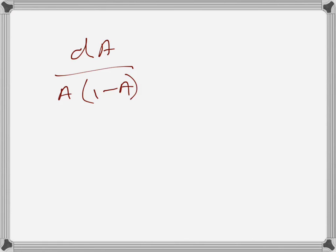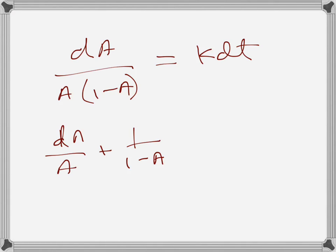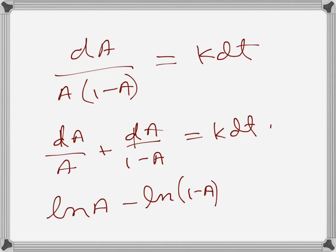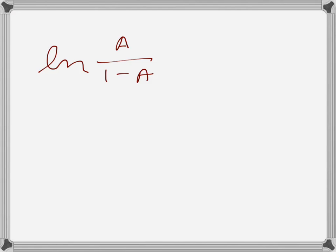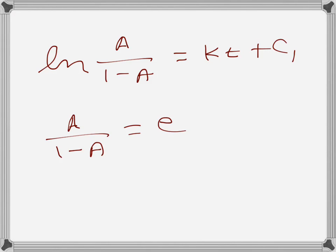Once we substitute B = 1 - A, we separate the variables: dA / [A(1 - A)] = k dt. Integrating both sides, this becomes ln(A) minus ln(1 - A) equals kt plus C₁. This simplifies to ln(A / (1 - A)) = kt + C₁.